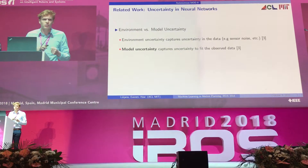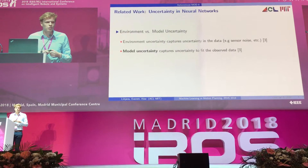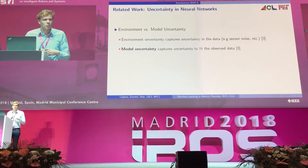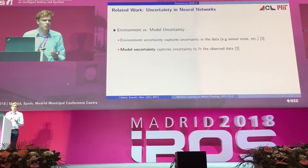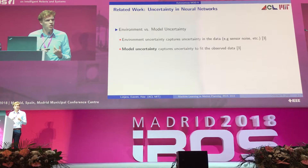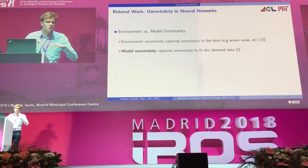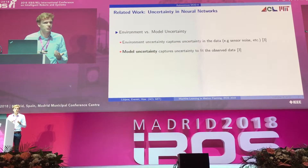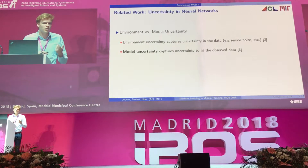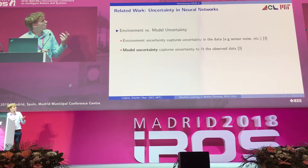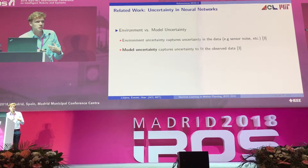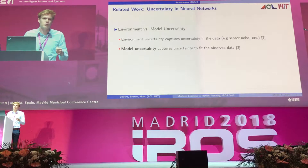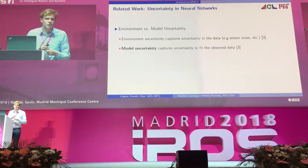To detect novel scenarios, we distinguish between environment uncertainty and model uncertainty. Environment uncertainty captures the uncertainty that's inherent in the data, such as sensor noise. Model uncertainty captures the uncertainty that the model has in fitting the observed data — and that's what we care about here.